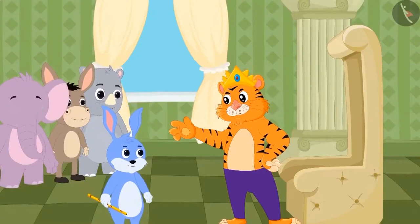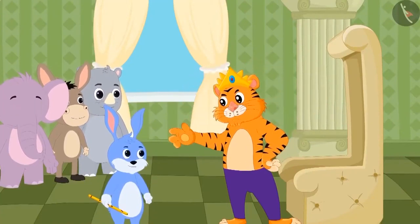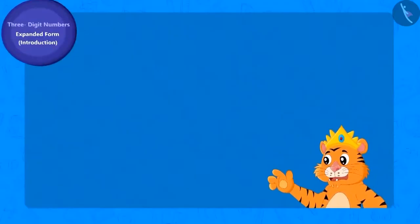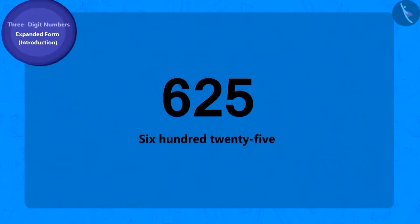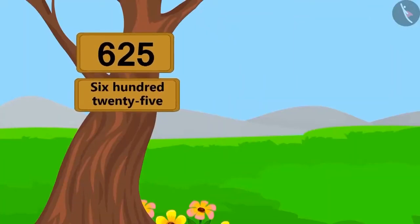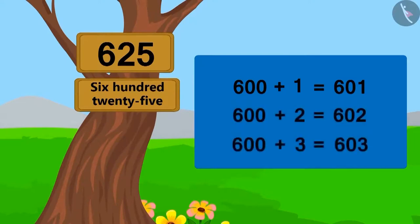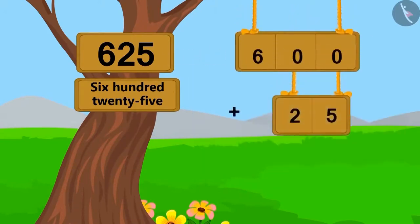The king was very happy and decided to give 625 gold coins to Bunny as a reward. But the king placed a condition: Bunny had to tell him the expanded form of 625. To write 625, let's start with 600. By adding 25 to 600 we get 625 — in other words, 625 is 25 digits ahead of 600. We can also write 25 in expanded form as: add 20 and 5.